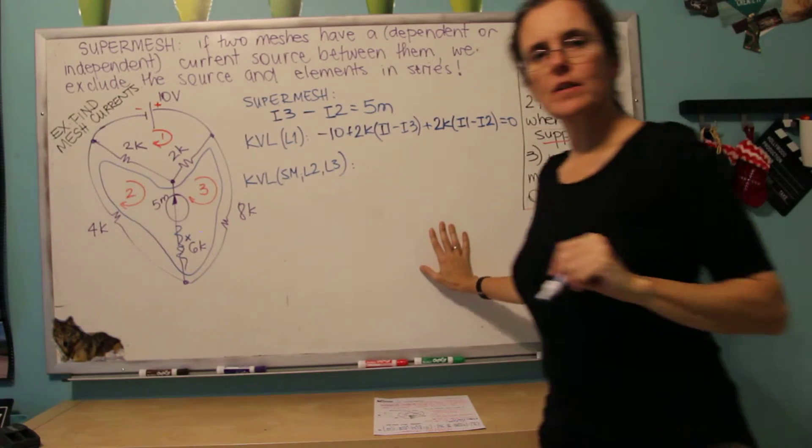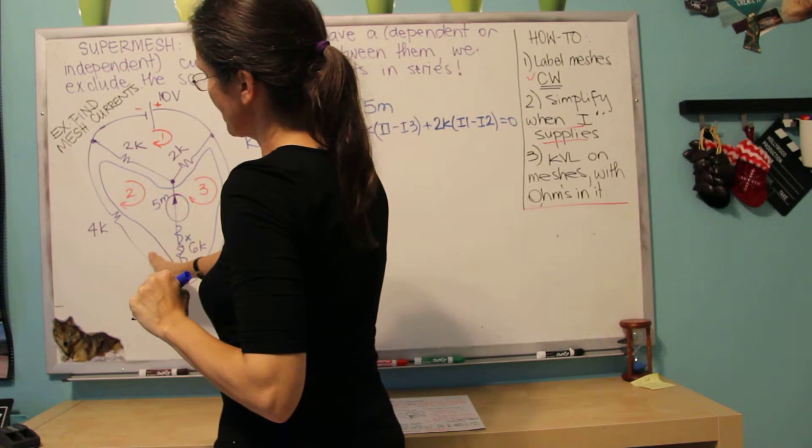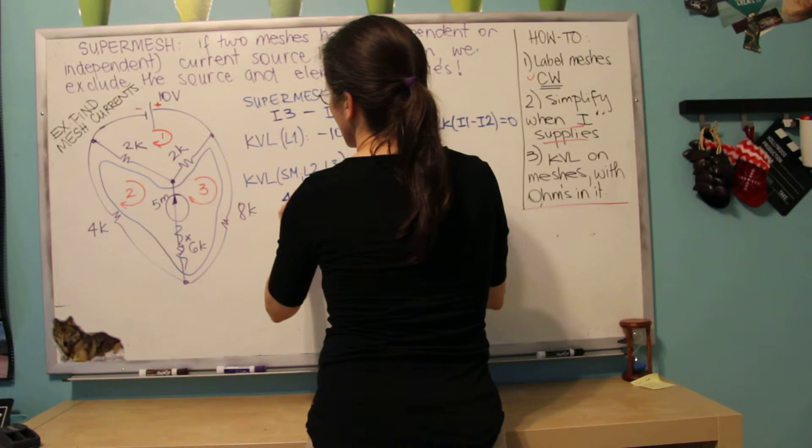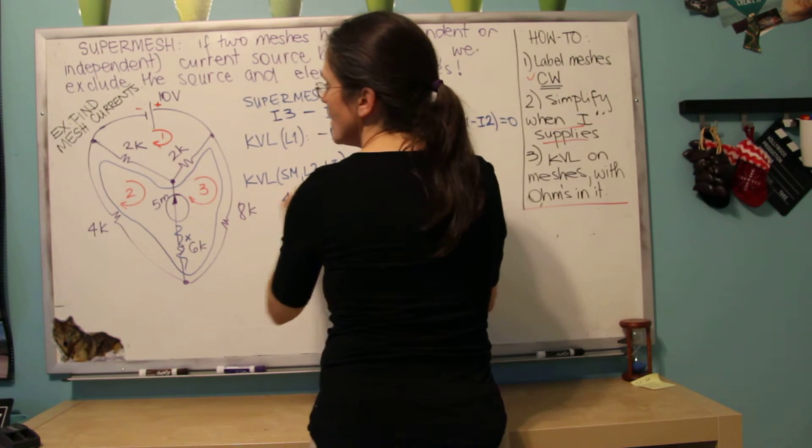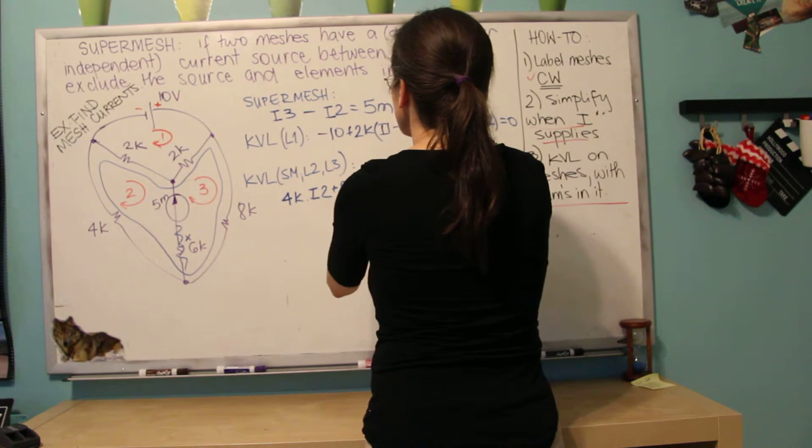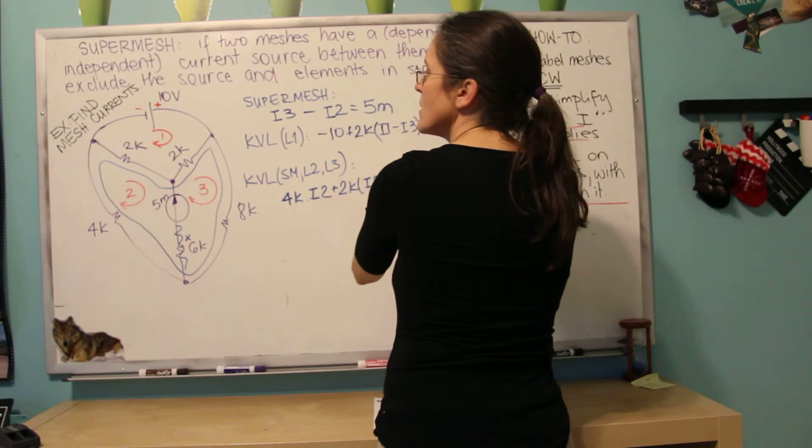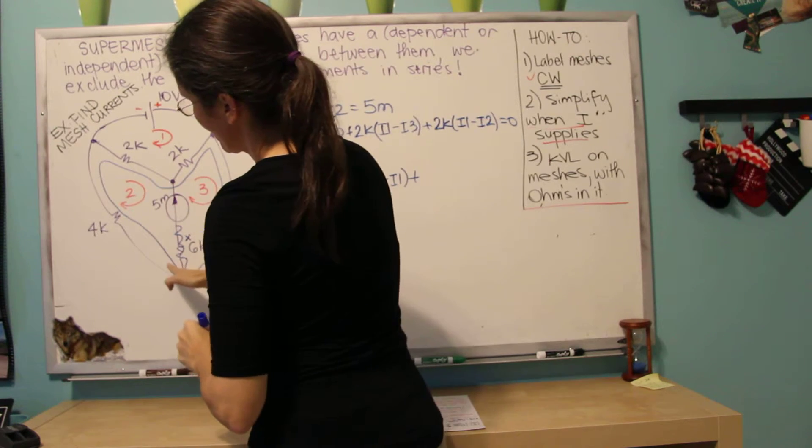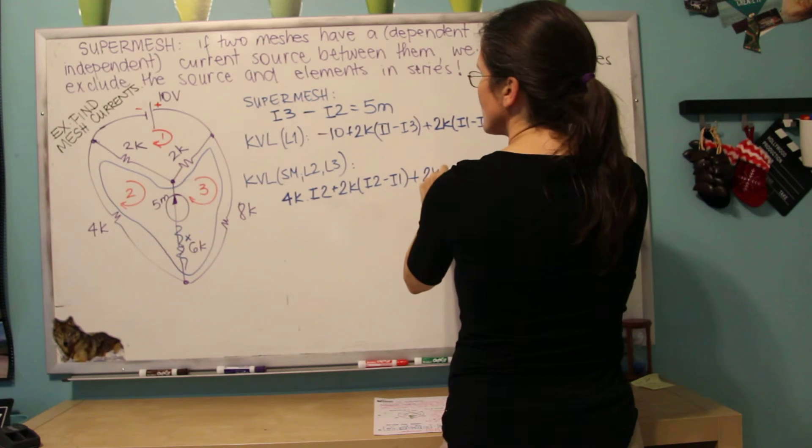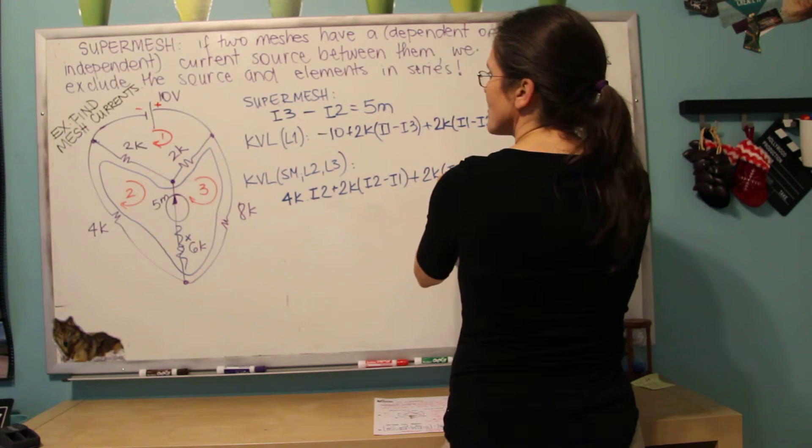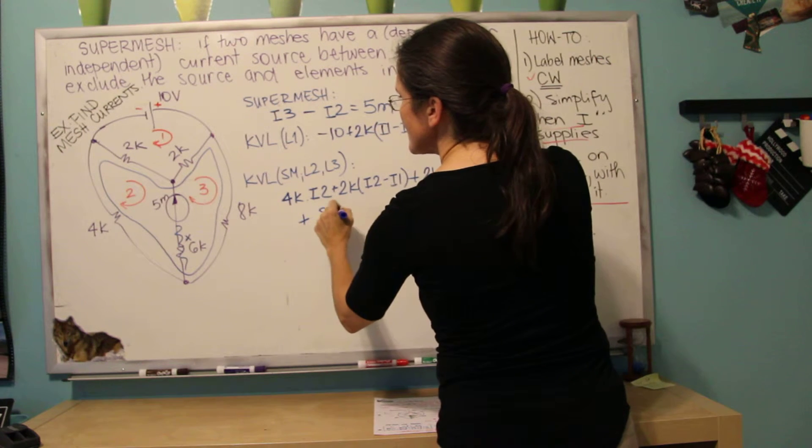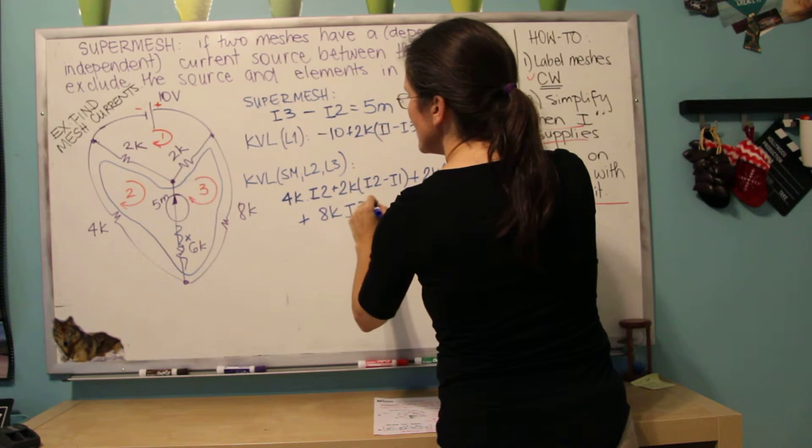Now I'm going to write the KVL for the super mesh. I'm going to write the KVL plus I2 minus I1 plus, and then I go here. So I'm following this blue line here, I2. I'm sorry, 2k I3 minus I1 plus 8k I3 equals zero.